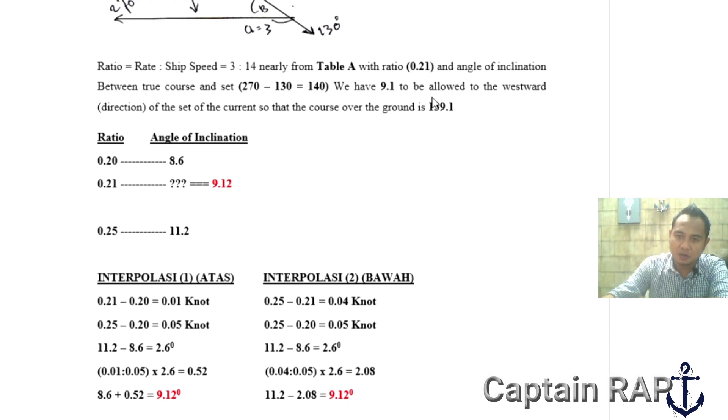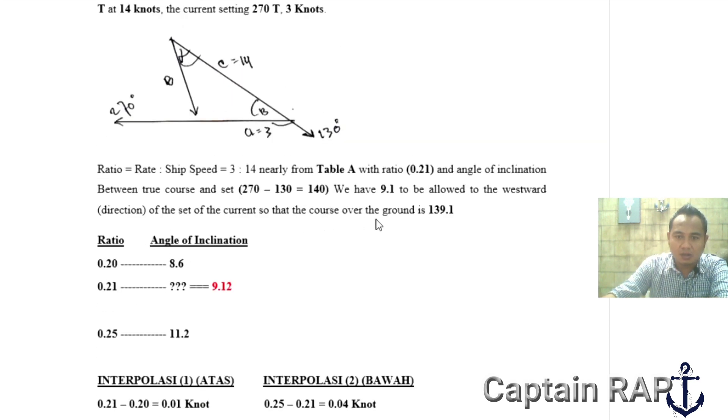Saya letakkan hasilnya 9.12. Dari hasil 2 variable ini didapatkan, we have 9.1 to be allowed to the wastewater direction of the set of the current, mengikuti arah daripada arus. So that the course of the ground is 139.1. Jadi karena tadi haluan kita 130 mendapatkan arus ke sana 270 derajat gaya berlawanan, maka hasil penambahannya itu 9.1, 130 ditambahkanlah dengan 9.1 jadi 139.1. Nah inilah dia course of the ground. Jadi walaupun teman-teman setting haluan di 130 dengan mendapatkan arus 270 derajat dan speednya 3 knot, sebenarnya kapal anda itu berjalan di 139.1 derajat. Jadi terjadi penyimpangan.